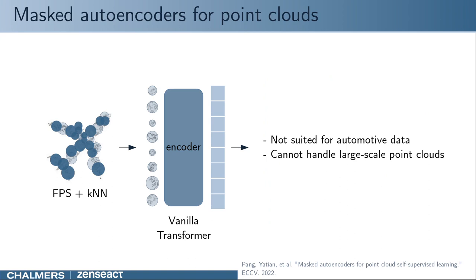While effective for dense point clouds with a single object or for indoor data, this point cloud representation does not scale for automotive data. Therefore, these encoders cannot be used for downstream tasks like 3D object detection in LiDAR point clouds.